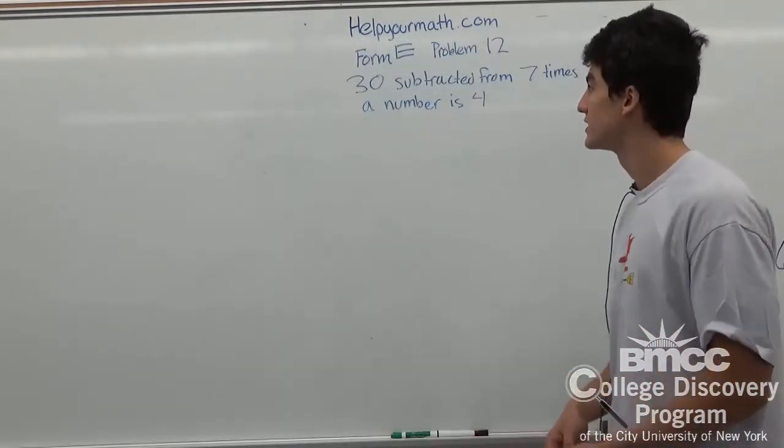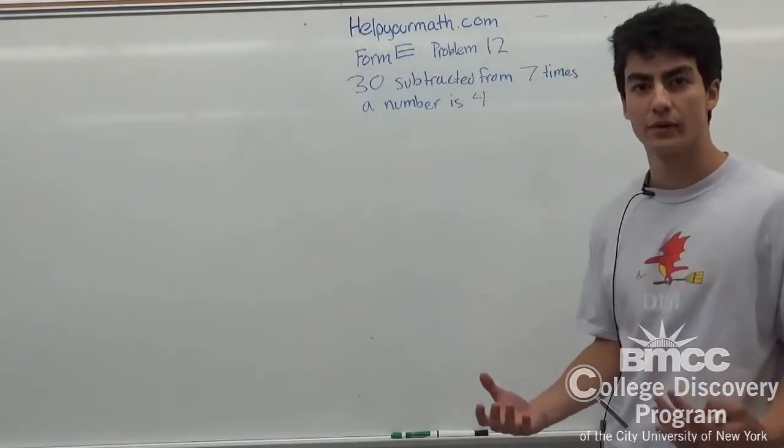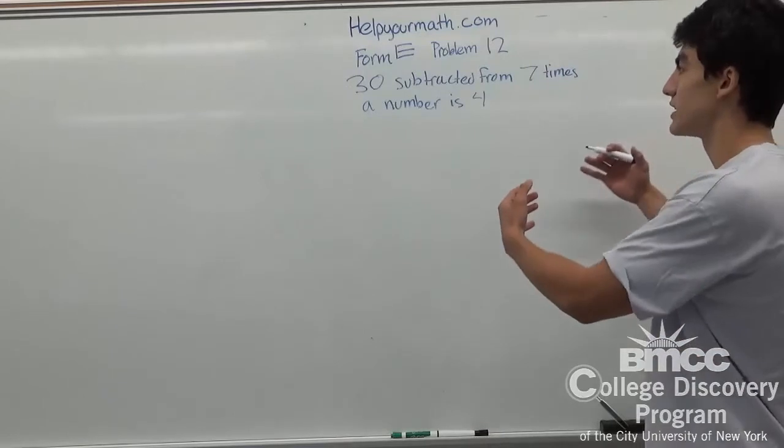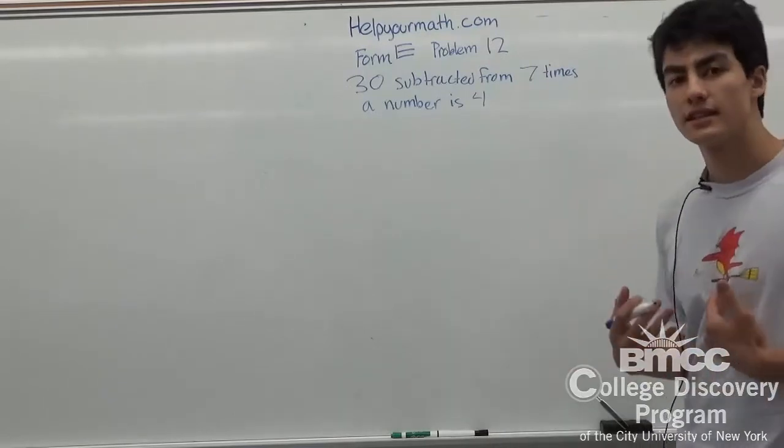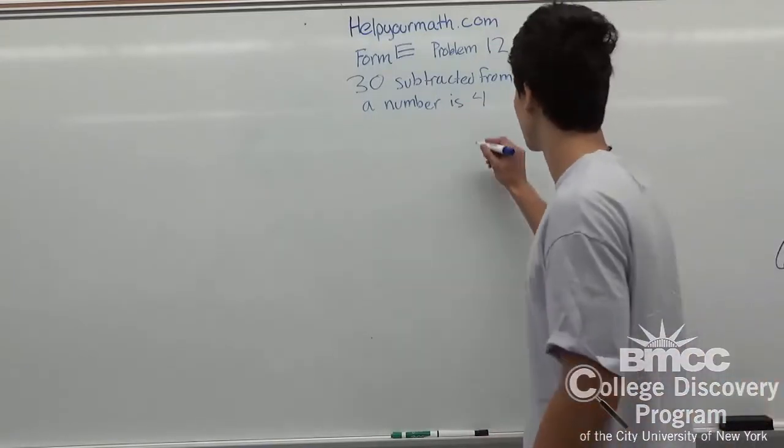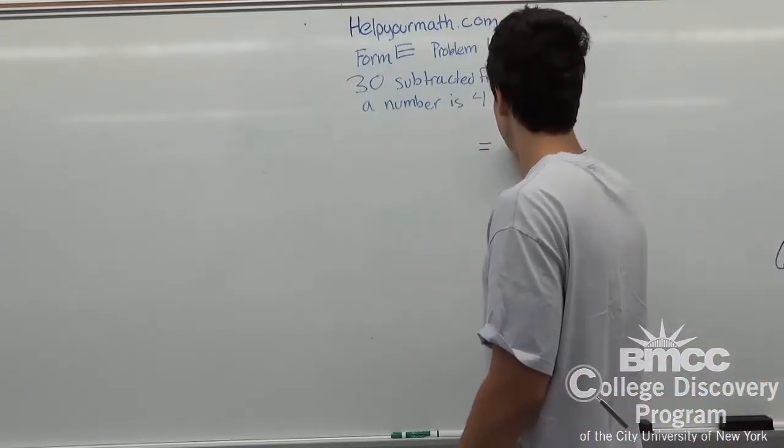The way we try and solve a problem like this is to figure out what exactly we're dealing with. 30 subtracted from 7 times the number is 4 obviously lets me know that something times minus something is going to be equal to 4. So I'll put the equal 4 here.